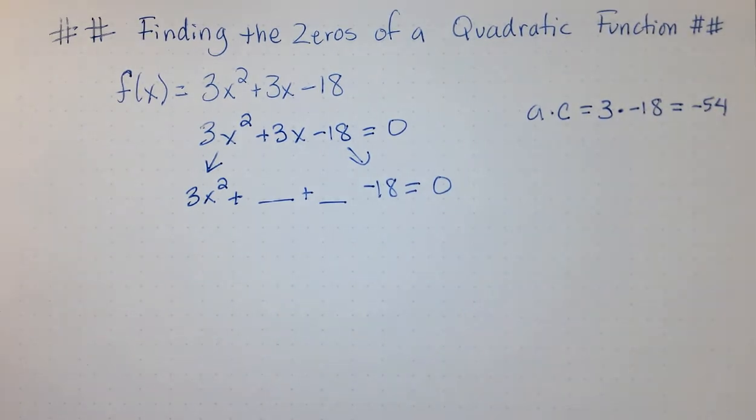Now, we need to find the factors of negative 54 that multiply to give me negative 54 and add to give me b. b in our problem is 3x. So, what are our factors of negative 54 that would multiply to give me negative 54 and add to give me 3?